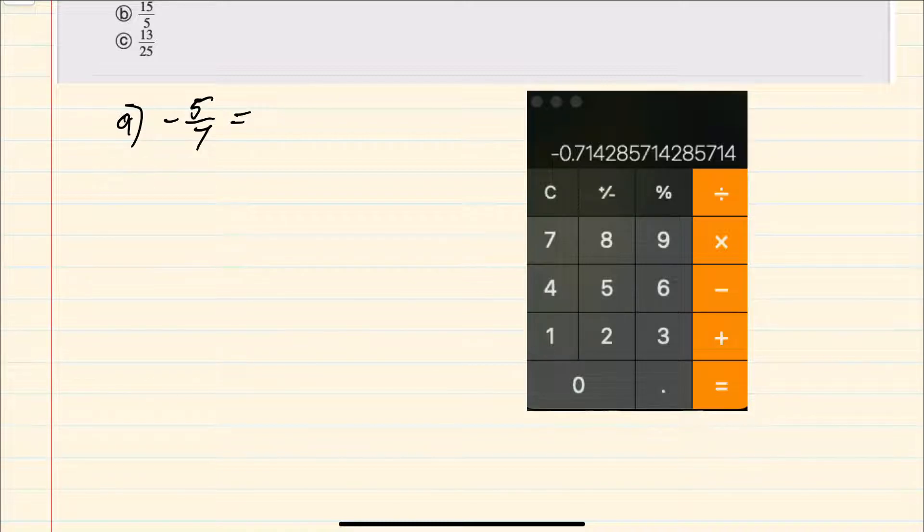then our question is, do the decimals repeat at any point? Noticing these first six digits do not repeat. However, the next six digits, 714285, are a repeat of the previous decimals.